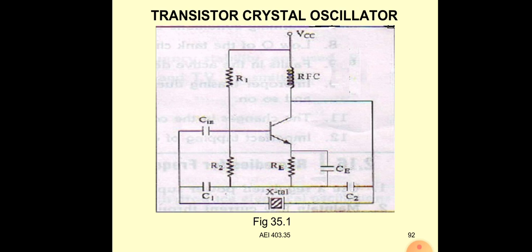When you apply the VCC voltage, the capacitor starts charging. Collector current flows through the C2 capacitor and C2 starts charging. Both C1 and C2 start charging, and when the energy discharges through the quartz crystal, the crystal starts vibration and produces a sustained signal. That feedback voltage is given to the coupling capacitor, which couples the feedback voltage and transfers it to the base terminal.